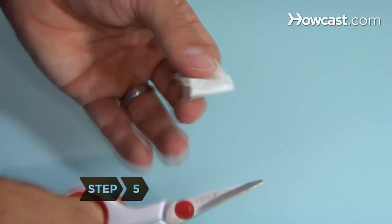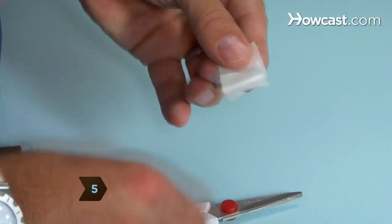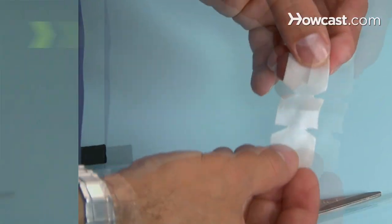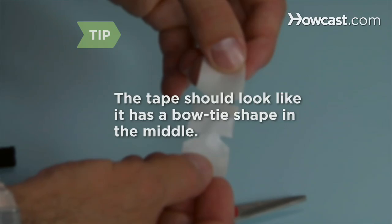Step 5: Unfold the tape so the sticky side is facing up. The tape should look like it has a bow tie shape in the middle.